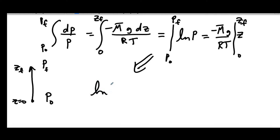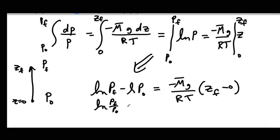So let's go ahead and plug those limits in. So we have the log of P final minus the log of P naught. And the right-hand side, we have minus molar mass times g over RT. And then we plug in z final minus zero. So that's just going to be z final. So we can simplify this by saying this is going to be the log of P final over P naught. Since we just have a zero, we can see it's just minus mg times z over RT.